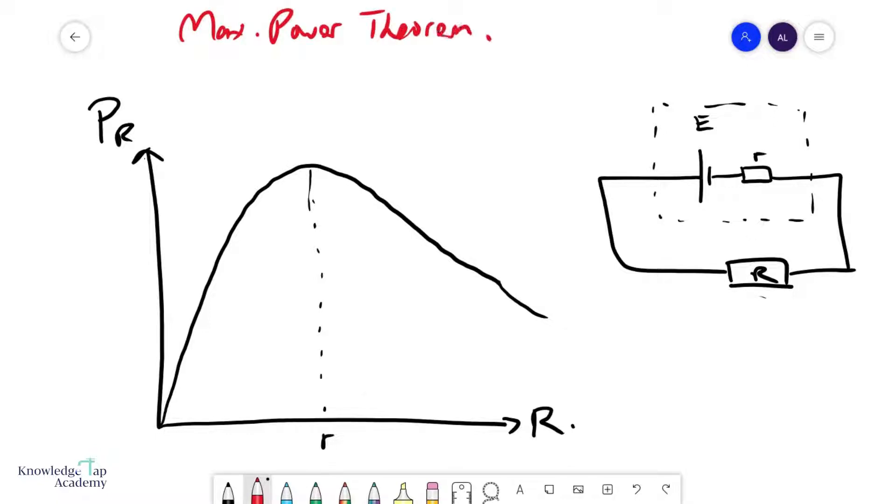The Maximum Power Theorem states that if you want to make the power dissipated in this resistor as large as possible, then you have to allow the external resistance R to equal the internal resistance r. This is illustrated here.